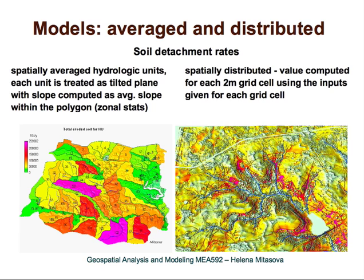The high erosion rates appear in the red and magenta areas. With high-resolution DEMs we can capture the impact of roads and go well beyond a single averaged unit. Conservation measures can therefore be much better targeted and planned.